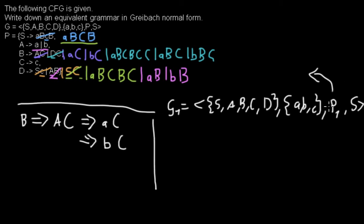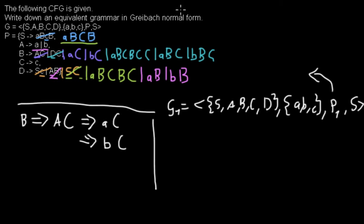These new colorful rules are now my new set of production rules P1. Also, if you look closely, you'll see that D doesn't appear on any right-hand side anymore — so D is a useless symbol. But this doesn't violate Greibach normal form, so in this example I won't worry about it. The grammar is now in Greibach normal form.